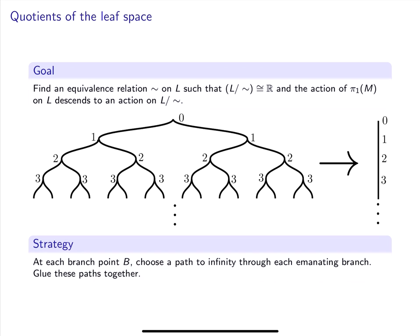Similarly, at this point, I'll choose a blue path to infinity and a red path to infinity. Now, at each branch point, I'll glue blue to red. You can see that after I've glued a pair of paths at each branch point, the quotient manifold is ℝ.